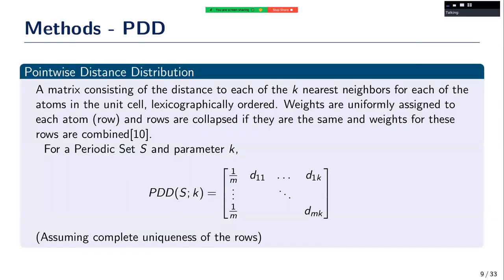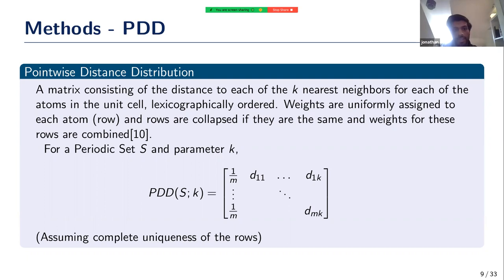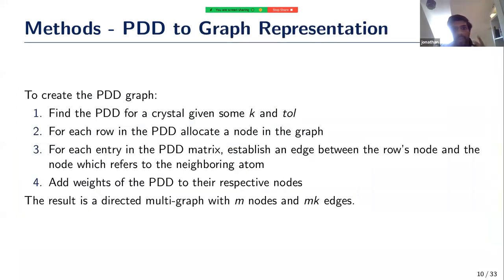Our graph is based on the pointwise distance distribution, or PDD. It is a matrix where each row represents an atom within the unit cell. For each atom we find the k nearest neighbor distances, which are the entries along that row. Each row is assigned a uniform weight of one over m, where m is the number of rows in the PDD or the number of atoms in the unit cell. We then collapse rows that are duplicates — where a duplicate can be within some tolerance and considered the same.